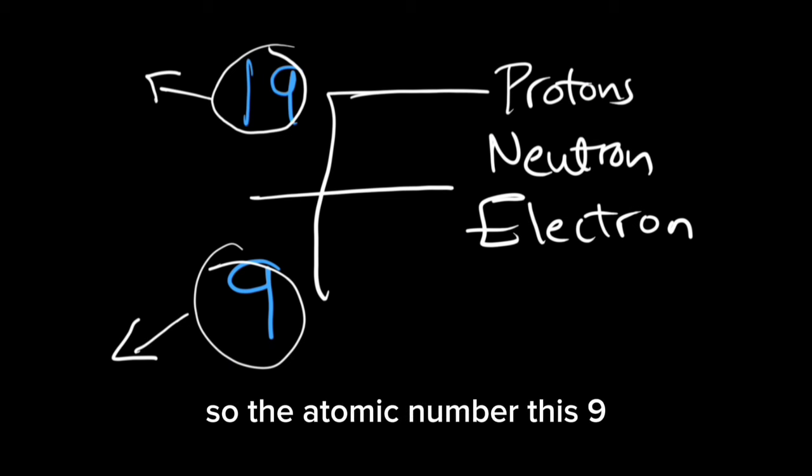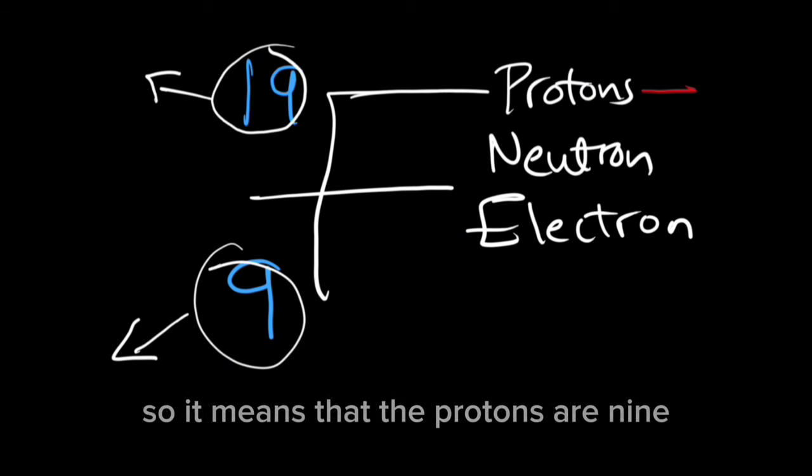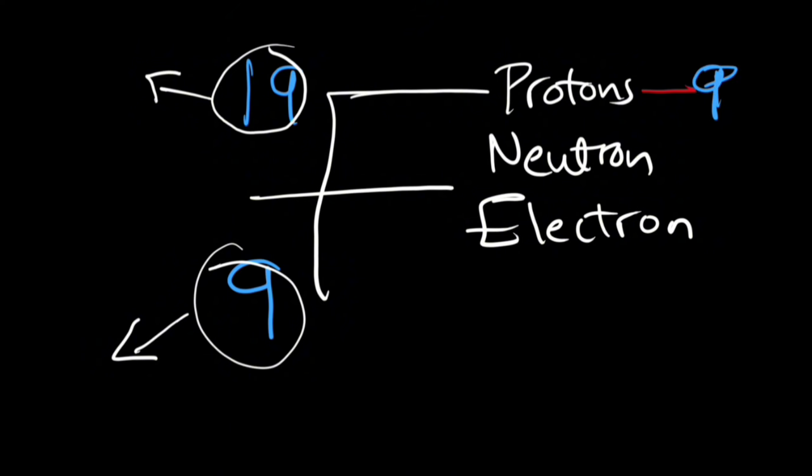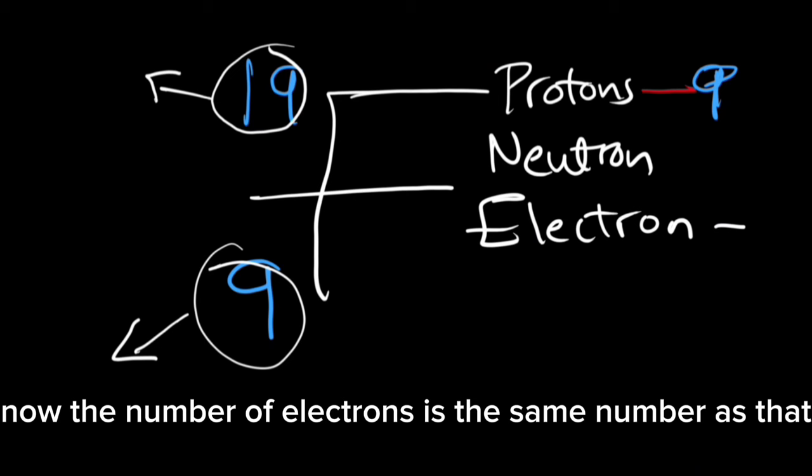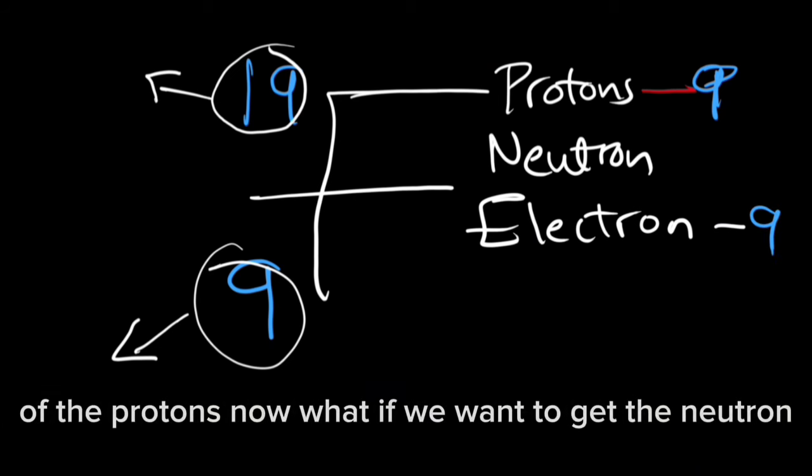The atomic number, this 9, is the proton number. So it means that the protons are 9. The number of electrons is the same number as that of the protons.